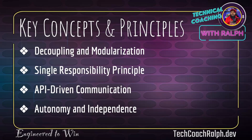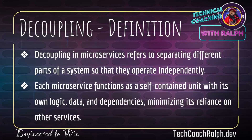Let's get into the key concepts and principles of microservices: decoupling and modularization, single responsibility principle, API-driven communication, autonomy, and independence. Decoupling in microservices refers to separating different parts of a system so that they operate independently. Each microservice functions as a self-contained unit with its own logic, data, and dependencies, minimizing its reliance on other services. Everything is separate from each other — we don't want any dependencies between the services.